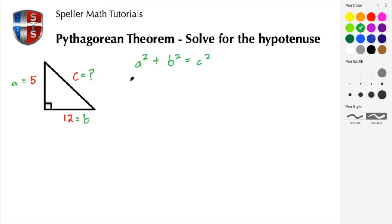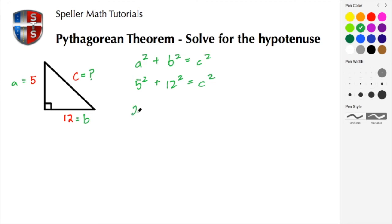We're going to do a basic substitution, placing in 5 squared plus 12 squared is equal to c squared. We substituted in 5 for a and 12 for b. Now let's do some evaluation: 5 squared is 25 and 12 squared is 144, and that is equal to c squared.